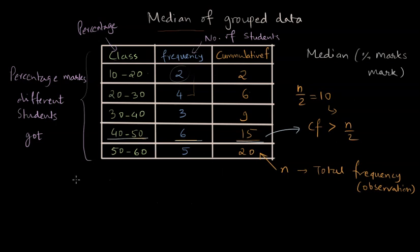The median class is 40 to 50. We know there are six observations in this class, so the frequency for this is six. CF naught is the cumulative frequency of the class before the median class. Class before median class is 30 to 40 and the CF naught is nine.